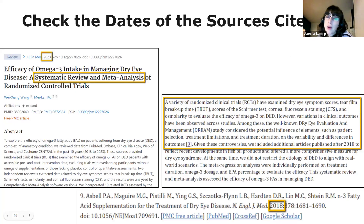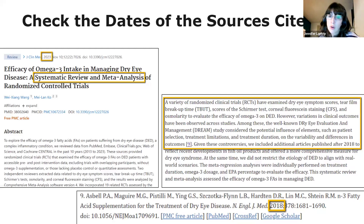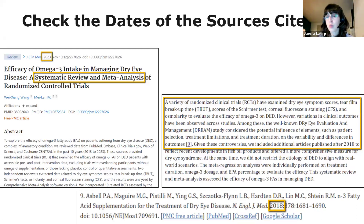In another example, we're looking at a systematic review and meta-analysis published in 2023. In the literature review section, they noted that published studies on omega-3 have shown different clinical outcomes, and noted that the DREAM study considered the potential influence of elements such as patient selection, treatment limitations, and treatment duration on the variability and difference in outcomes. Based upon this, they included additional articles published after 2018 to reflect recent developments in fish oil products and offered a more comprehensive measure for dry eye syndrome. So they didn't choose their date range arbitrarily — they looked at the body of research as a whole and determined that studies published after the DREAM study would include variables it suggested.